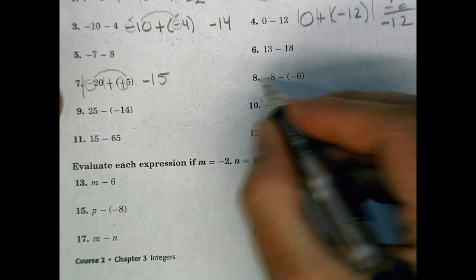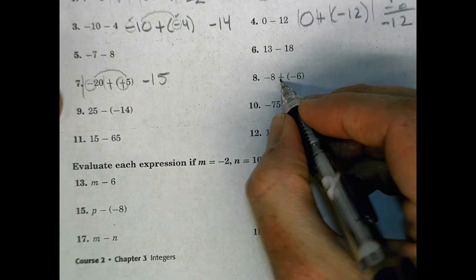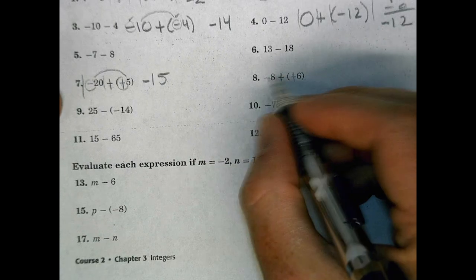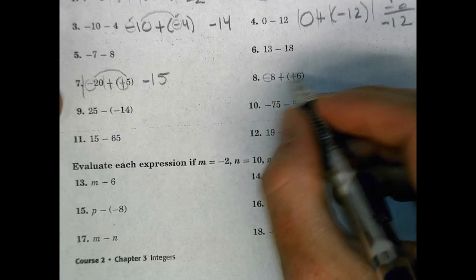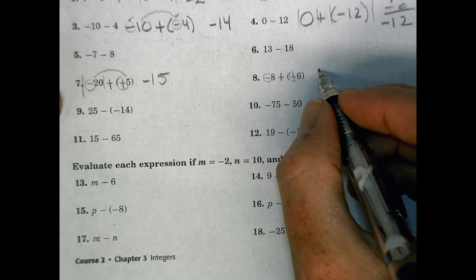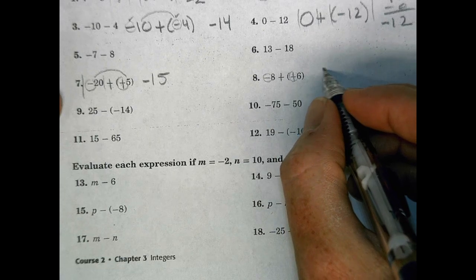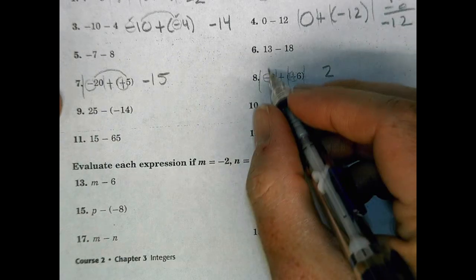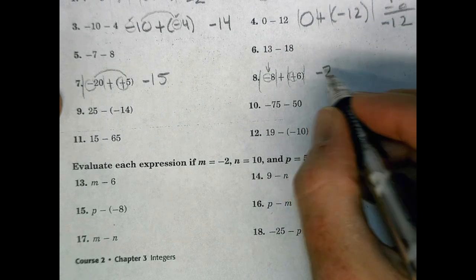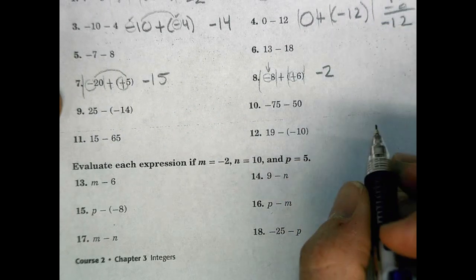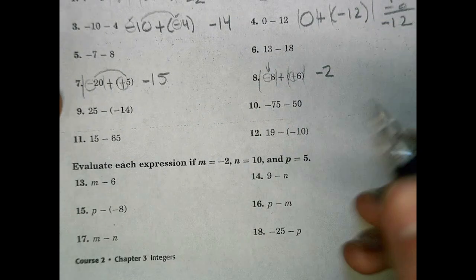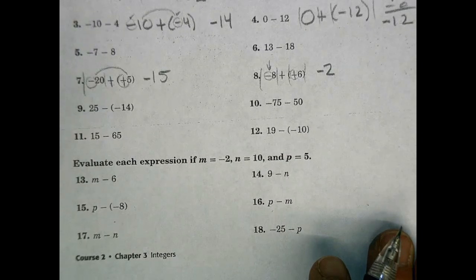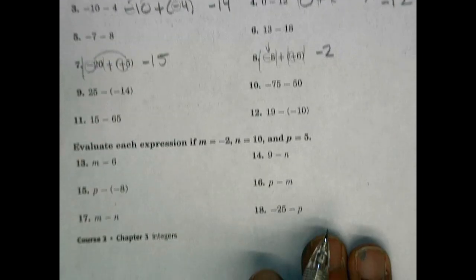For the next one, add the opposite. We have a negative and a positive, so find the difference: 8 minus 6 is 2, and the greater absolute value belongs to negative 8, giving us negative 2 as our solution. That's the core idea behind most of the problems today when you do your homework.